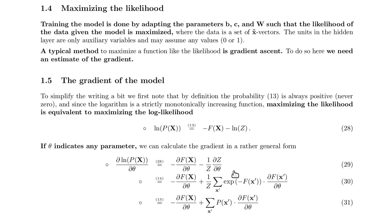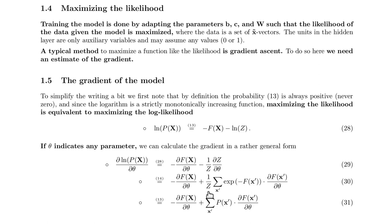The partition function is given by the sum over x, over all possible states of the visible units, times the exponential of minus the free energy. If we take the derivative of that with respect to theta, we have outer derivative times inner derivative, and we get this expression. This is again just the probability of x' if we also take into account the partition function.